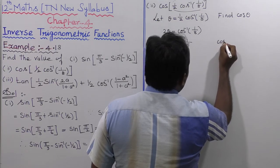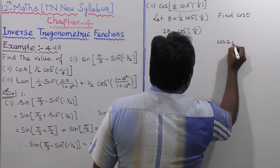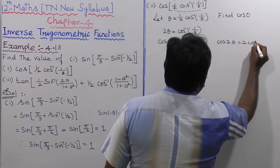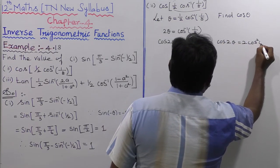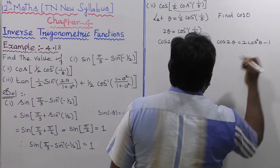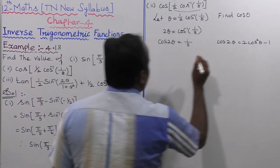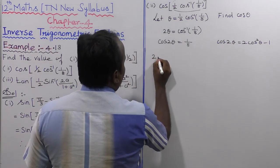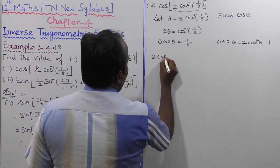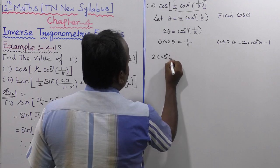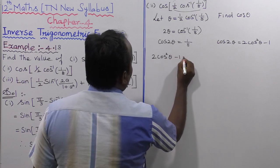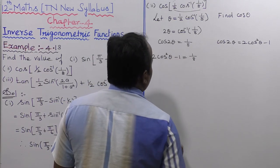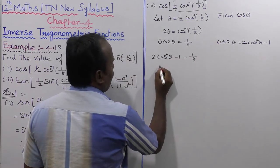Using the trigonometric formula cos(2θ) = 2cos²θ - 1, we substitute to get 2cos²θ - 1 = 1/8.